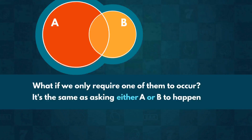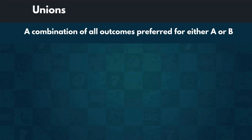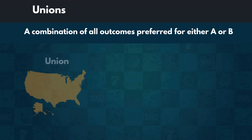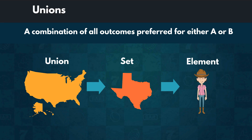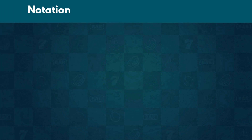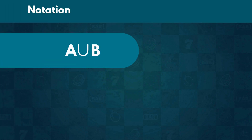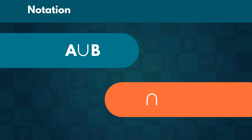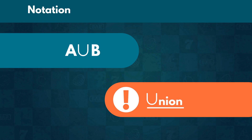The union of two sets is a combination of all outcomes preferred for either A or B. If you think about different American states as separate sets, then the citizens of each state would be their elements. Just like every Texan is an American, so is every element of an individual set also an element of the union. We denote the union of two sets as A union B. The symbol we use is just the intersection symbol flipped upside down — remember it resembles a capital letter U.